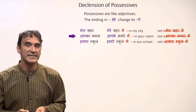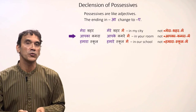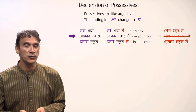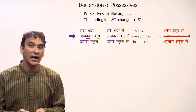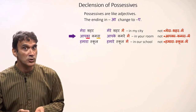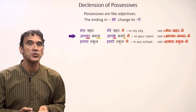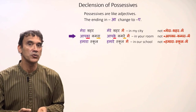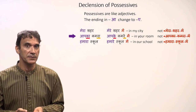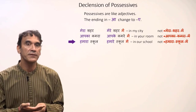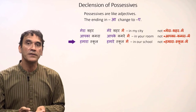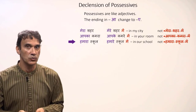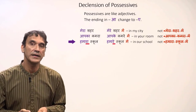Next: 'aapka kamra' (your room) becomes 'aapke kamre mein' (in your room). 'Aapka' ends in 'ā' and 'kamra' also ends in 'ā,' so both change to 'e' with the postposition. It will not be 'aapka kamre mein.' The final example: 'hamara school' (our school) becomes 'hamare school mein' (in our school) — 'hamara' becomes 'hamare.'